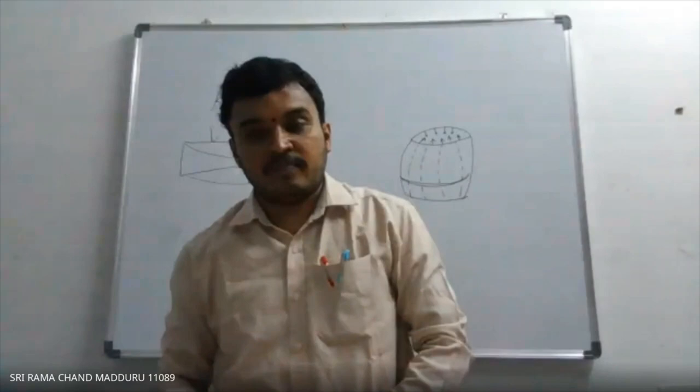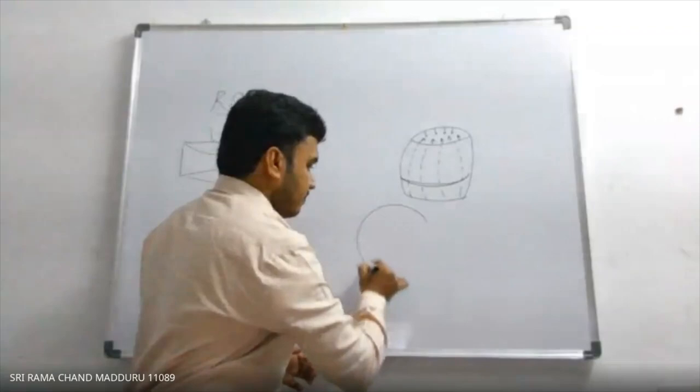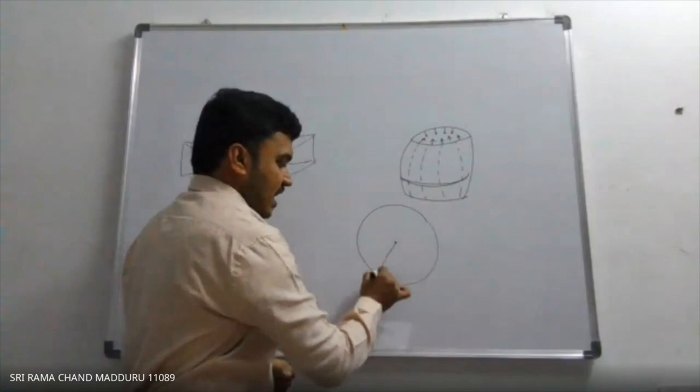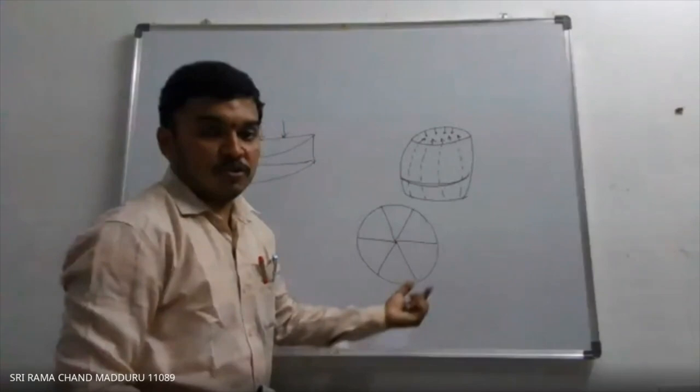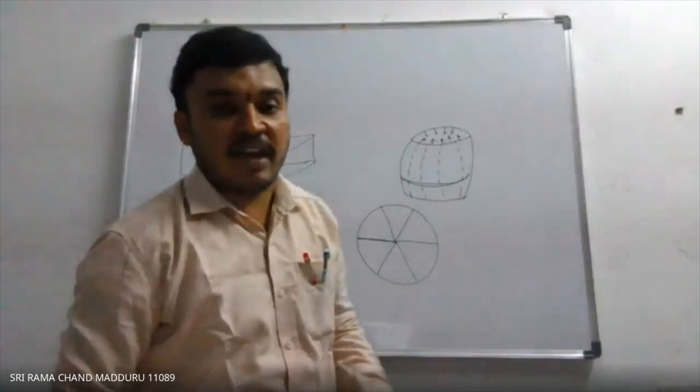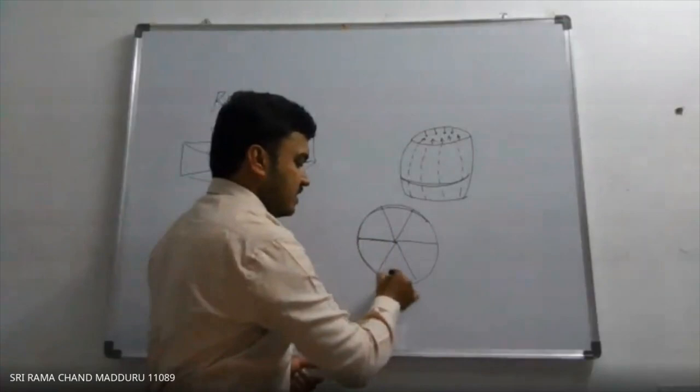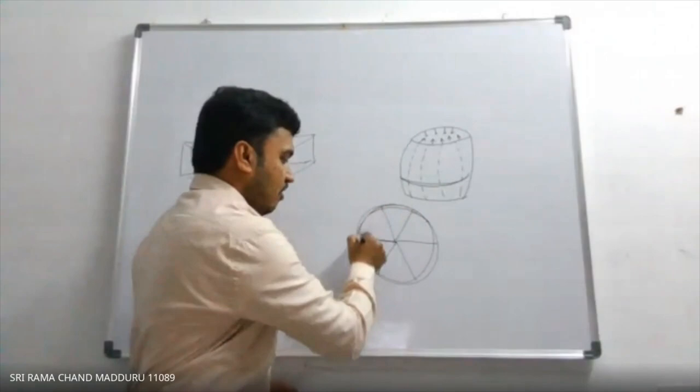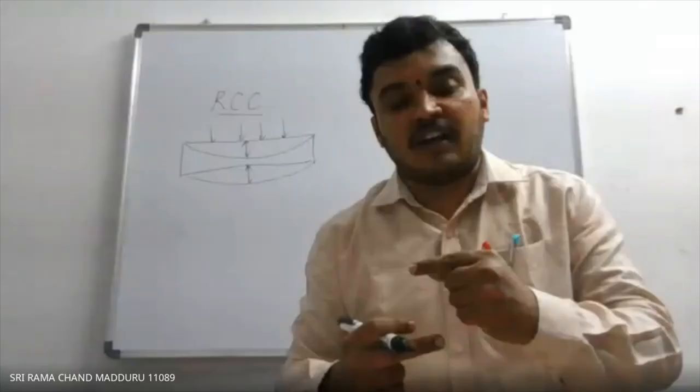Another example is the spokes present in your bicycle. If you see the cycle wheel, it has spokes, and these spokes are under pre-tension — they are pre-stressed. Similarly, consider a bullock cart wheel: the wooden wheel of a cart is another example of this principle.